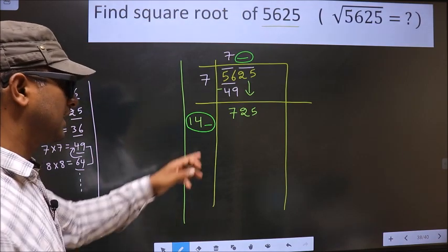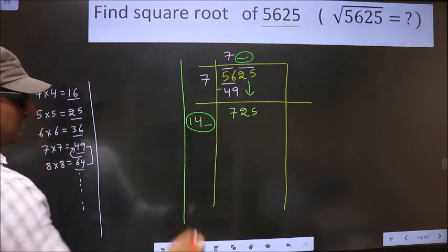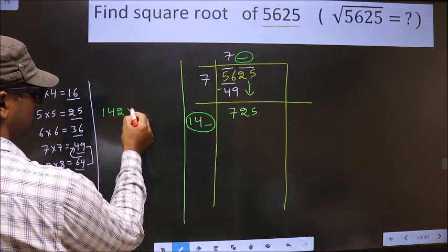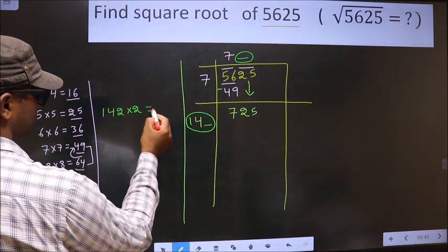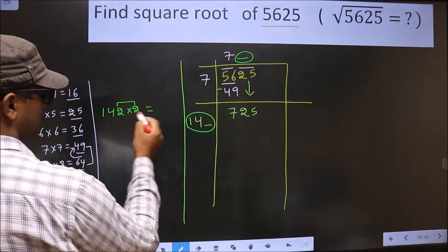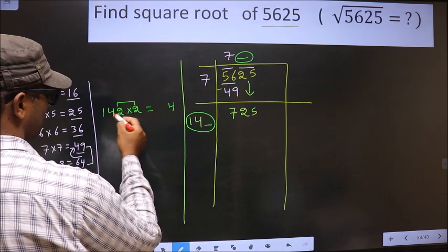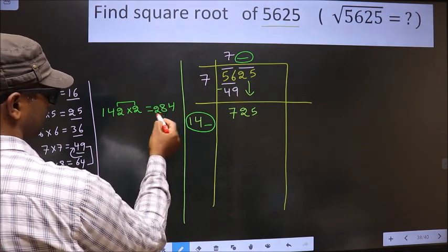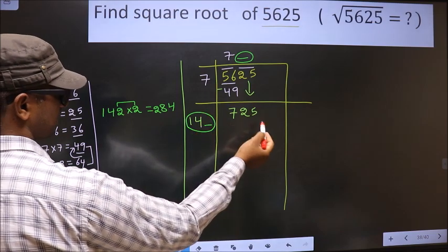So let us find the number here. If I take 2, we should also multiply by 2. These two numbers should be same. So 2 × 2 is 4, 2 × 4 is 8, 2 × 1 is 2. This is far away from this.